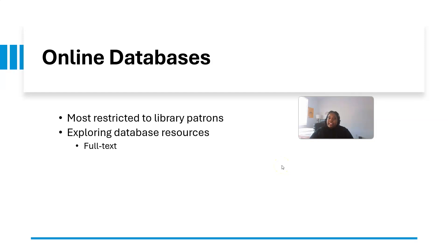Then we have online databases. As a student of this college, you should have access to many online databases. You want to look at full text databases so you have access to the entire piece of research. If you find an article that's not full text, do not fret — contact the librarian. I've had to do this many times. If the article isn't available through our library already, librarians will find and provide the information free of charge to you.